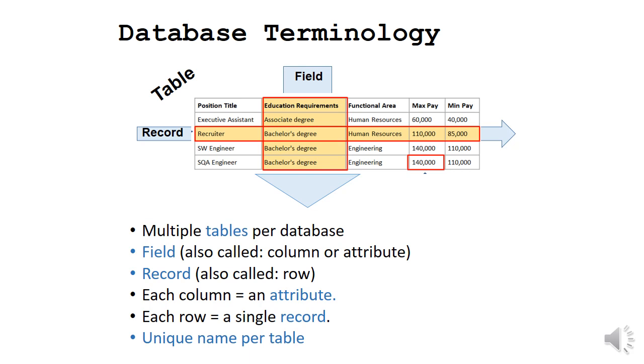And you also get the records, which are the rows. So we will talk about rows or records. So each column is an attribute and each row is a single record. And an attribute can be something like somebody's name or somebody's age. Or here we have a table with position titles. It's obviously a table of different jobs in a company. The education requirements is a field. And each table must have a unique name.